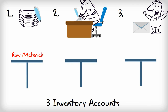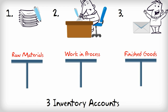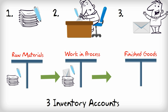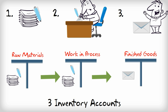We have three inventory accounts: raw materials, work in process, and finished goods. Raw materials are all the materials we will need in the factory. Work in process represents all the products that are in process — partly finished or just started. Finally, finished goods are ready to be sold. Each inventory account is tightly connected to the stages of production.